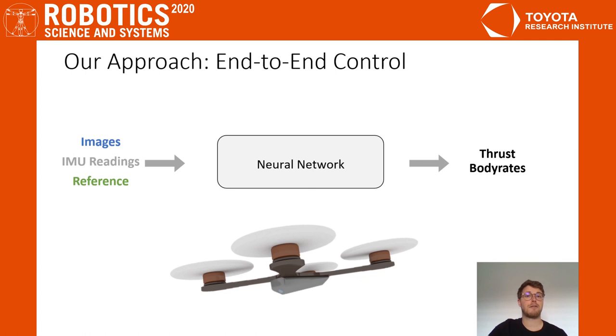The acrobatic maneuvers that you've seen before were performed by a learned sensory motor policy. In contrast to classical approaches that rely on the separation of state estimation and control, our approach is to directly learn an end-to-end controller in the form of a neural network. This controller maps from sensor inputs such as images, IMU readings and the reference directly to control commands in the form of collective thrust and body rates.